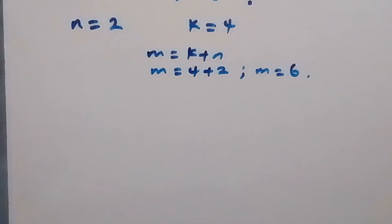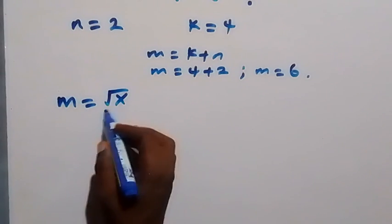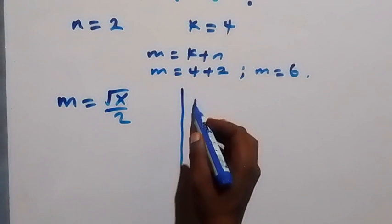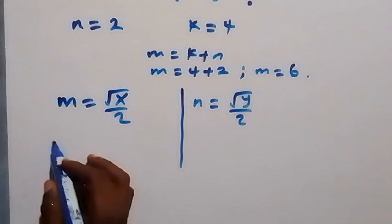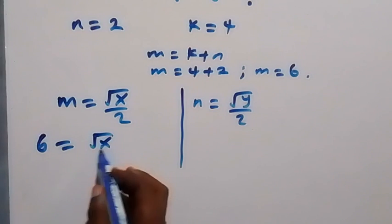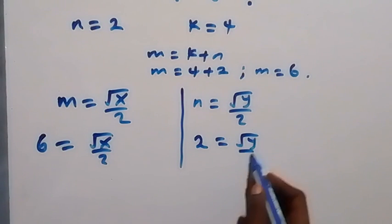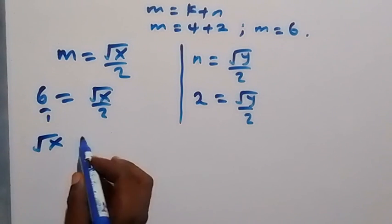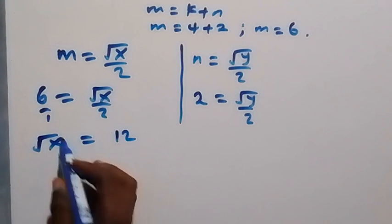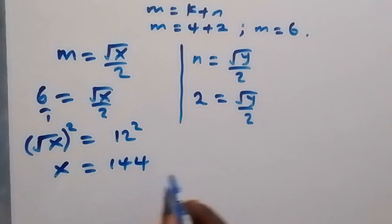We got n equal to 2 and m equal to 6. Recalling that m equals √x over 2, we substitute m = 6: so 6 equals √x over 2. Cross-multiplying gives √x equals 12. Squaring both sides gives x equals 144.